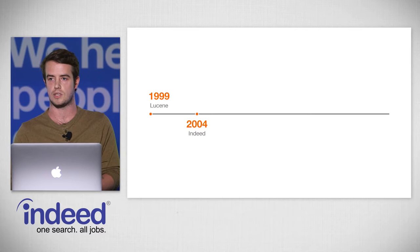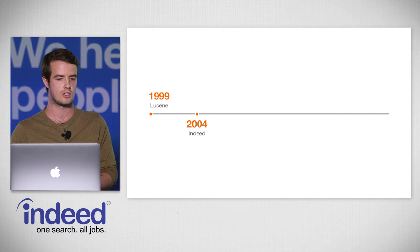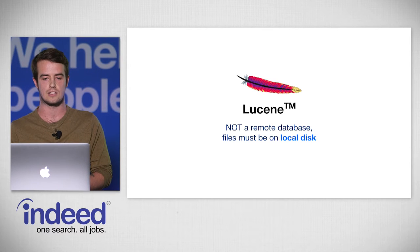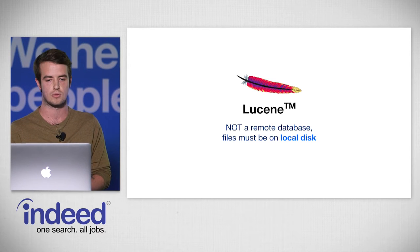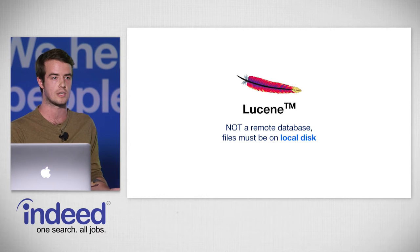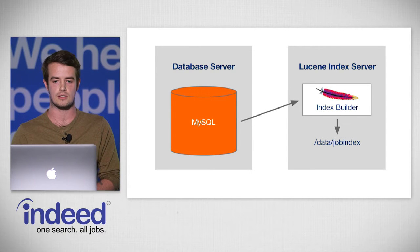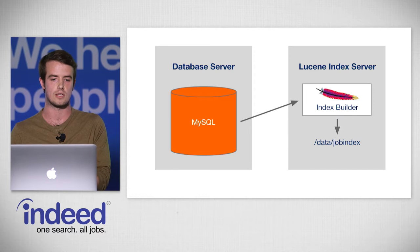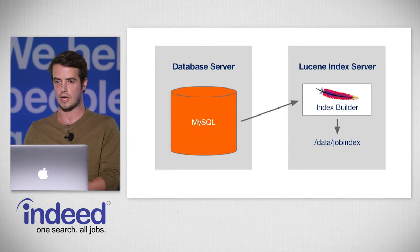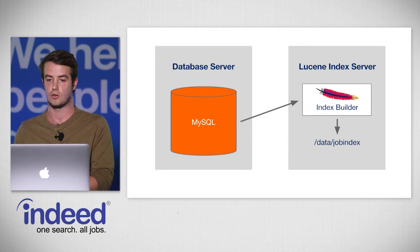By the time Indeed launched in 2004, there was another technology that had become the industry standard for search called Lucene. Lucene is a high-performance, full-featured text search engine library, and it's really fast. One of the ways it's able to be fast is that it's not a remote database like MySQL — the files for Lucene must be stored on the local disk of the application server, or in our case, our job search engine. A typical way to build a Lucene index is to have a process reading from a data source like MySQL and writing the Lucene index to the local file system.